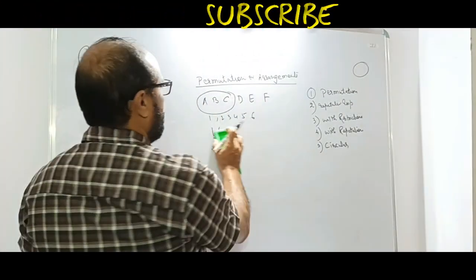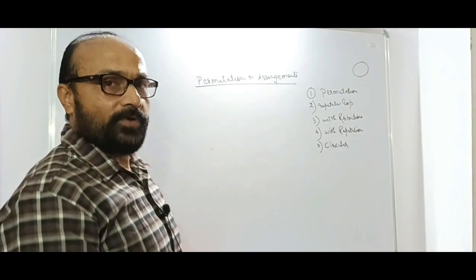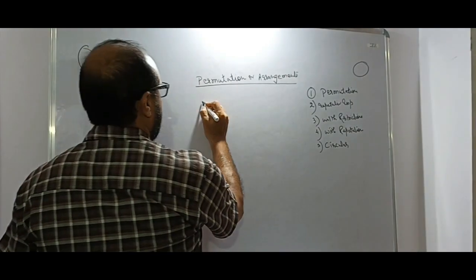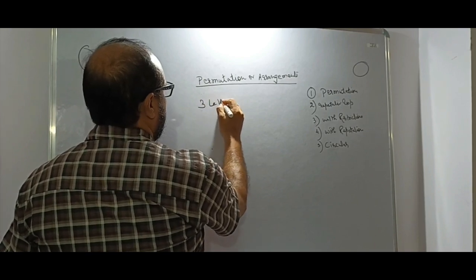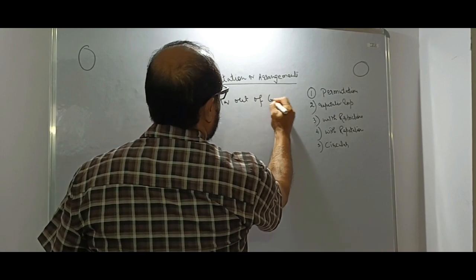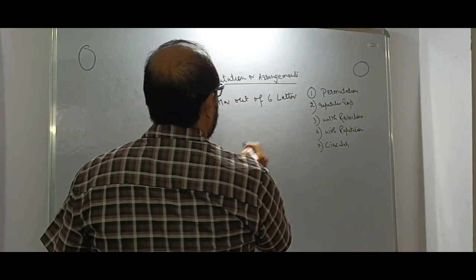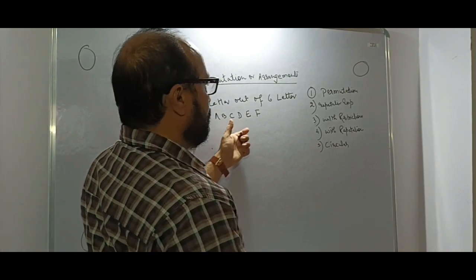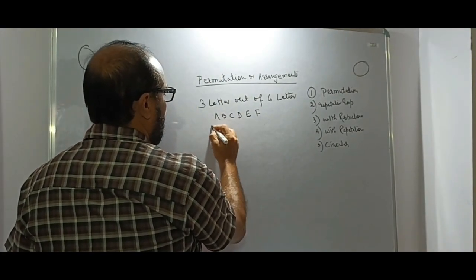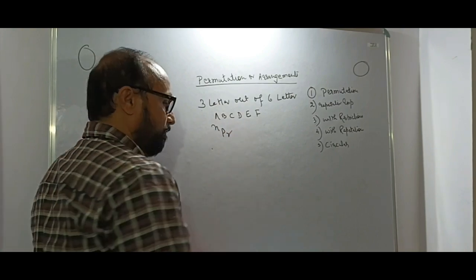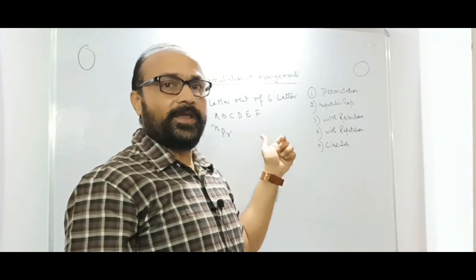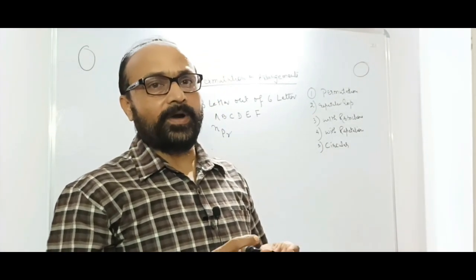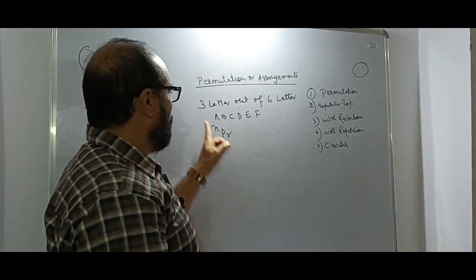Now coming to the repetitive case — what is the meaning of repetitive? Suppose you have been asked to take out three letters out of six letters. The letters are A, B, C, D, E, F. Then your formula will be nPr. The basic thing is that many students get confused about why we use P, what is r, and what is n.